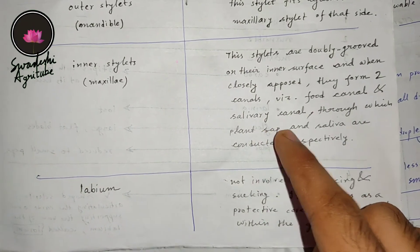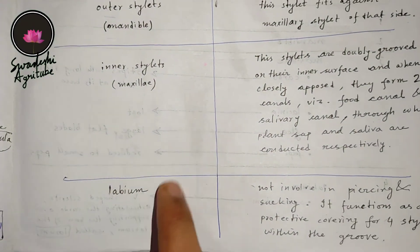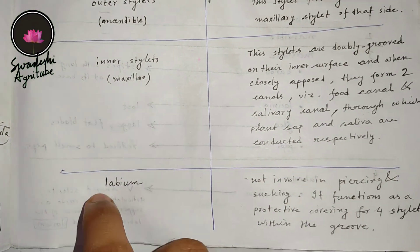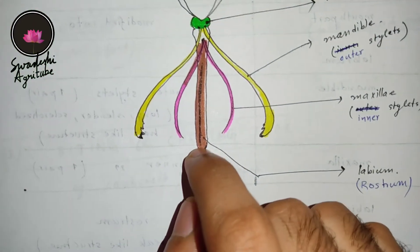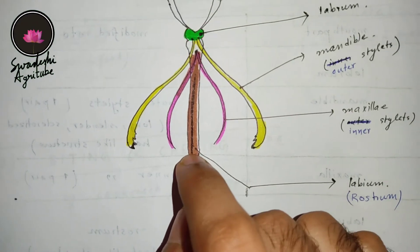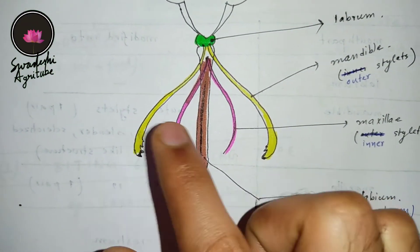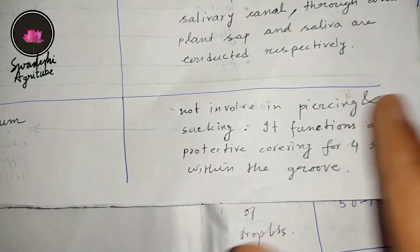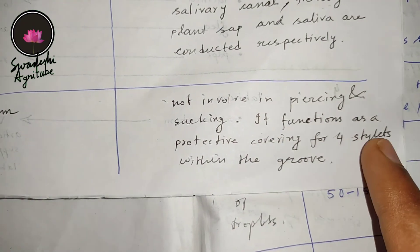The labium is not directly involved in piercing and sucking, but it is modified into a beak-like structure called the rostrum because it functions as a protective covering for the outer and inner stylets within the groove.